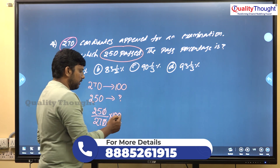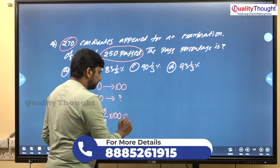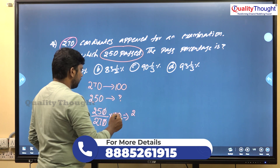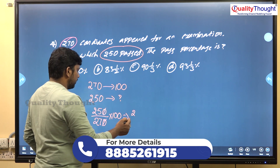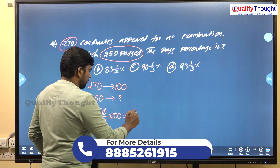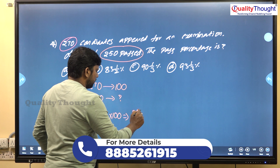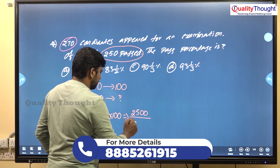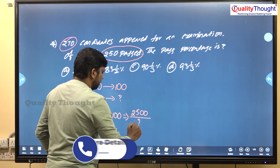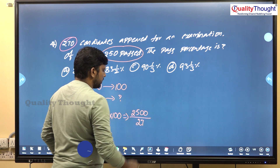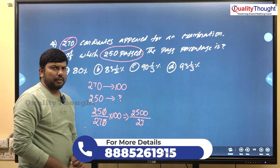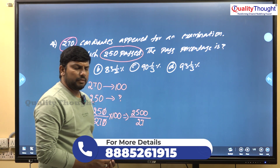25 into 100 gives 2500. So we have 2500 by 27.